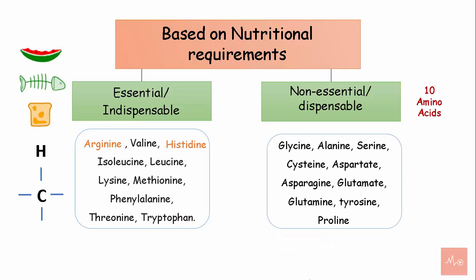Examples of non-essential amino acids are glycine, alanine, serine, cysteine, aspartate, asparagine, glutamate, glutamine, tyrosine, and proline.